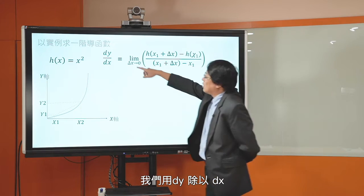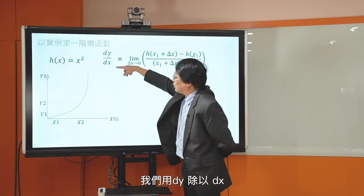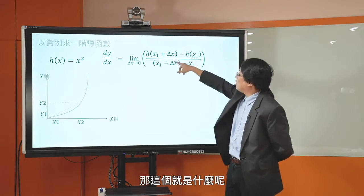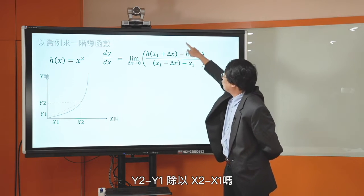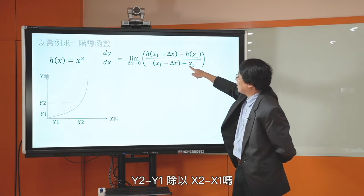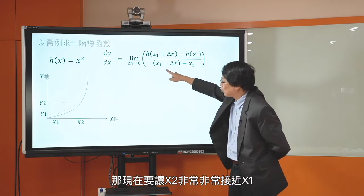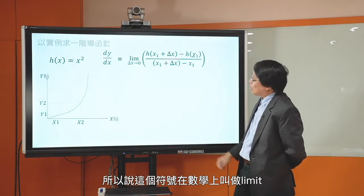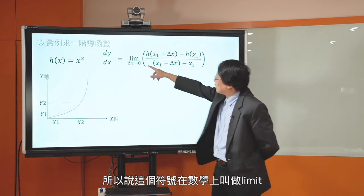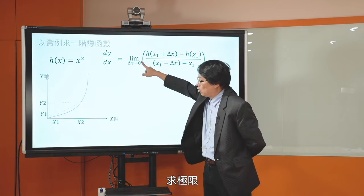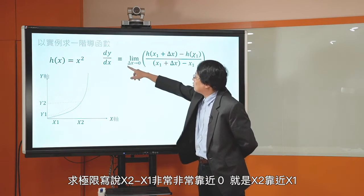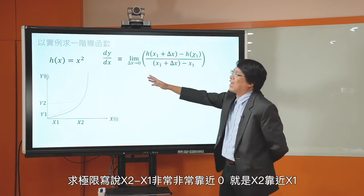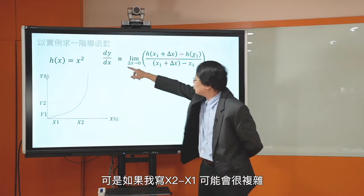可是我们可以用上次讲微分的概念：如果你把X2非常非常靠近X1，这时候Y2会非常非常靠近Y1，这条线就越来越接近在那一点上面切线的斜率。所以我们用DY除以DX这个微分的概念，等于Y2减Y1除以X2减X1。在数学上这叫做Limit，求极限，让X2减X1趋近于0。